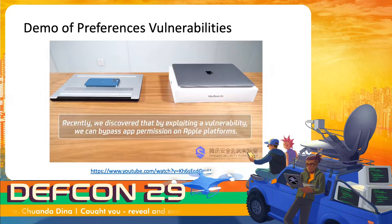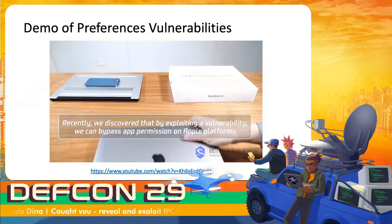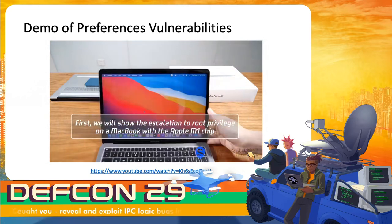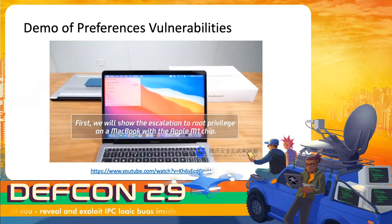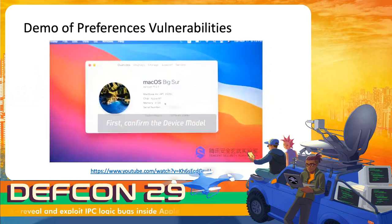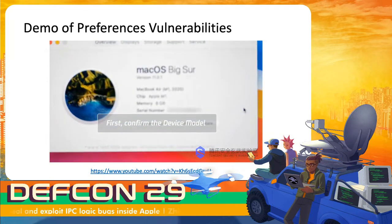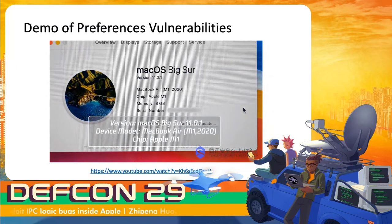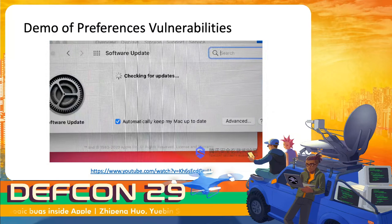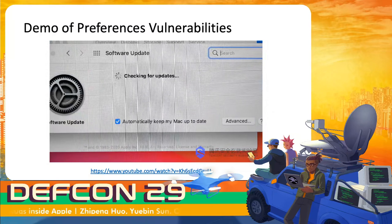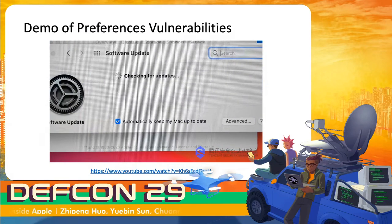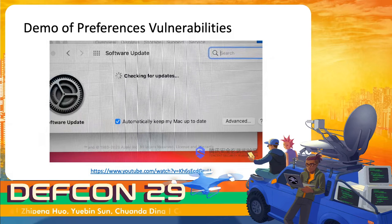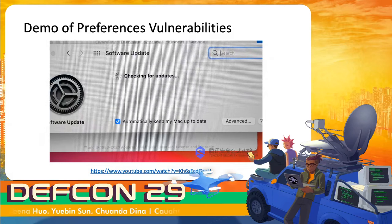Here is a demo. We use these vulnerabilities to achieve arbitrary file read and write, and then gain root privileges on macOS and read privacy data on iOS. First, we use the preference vulnerabilities to achieve root privilege. We can see system integrity protection is enabled, and the current user is a normal user — not root. We can gain root privileges very quickly.